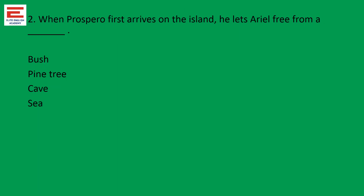Question two: when Prospero first arrives on the island, he lets Ariel free from a pine tree. The answer is directly a pine tree.